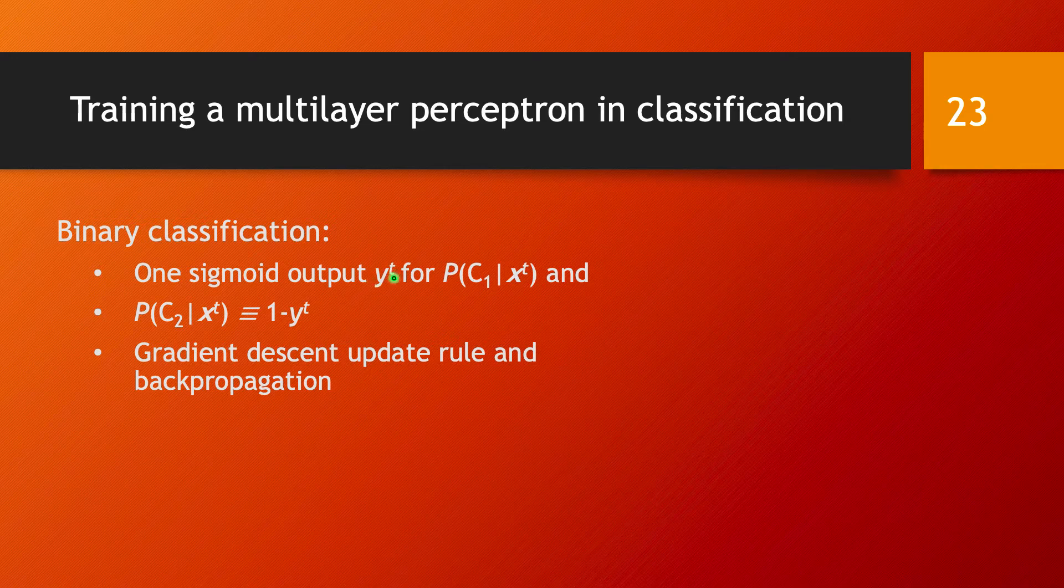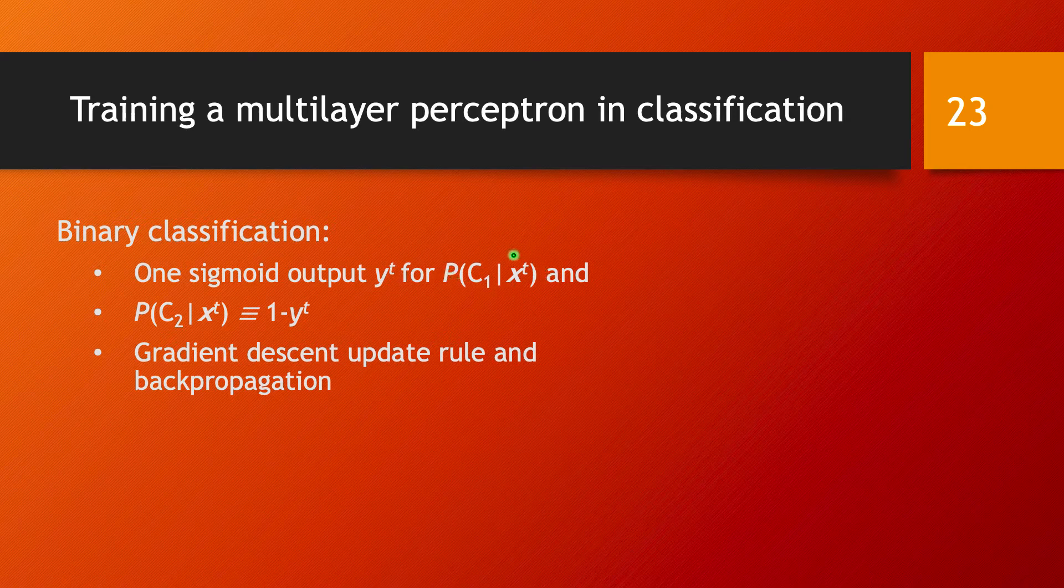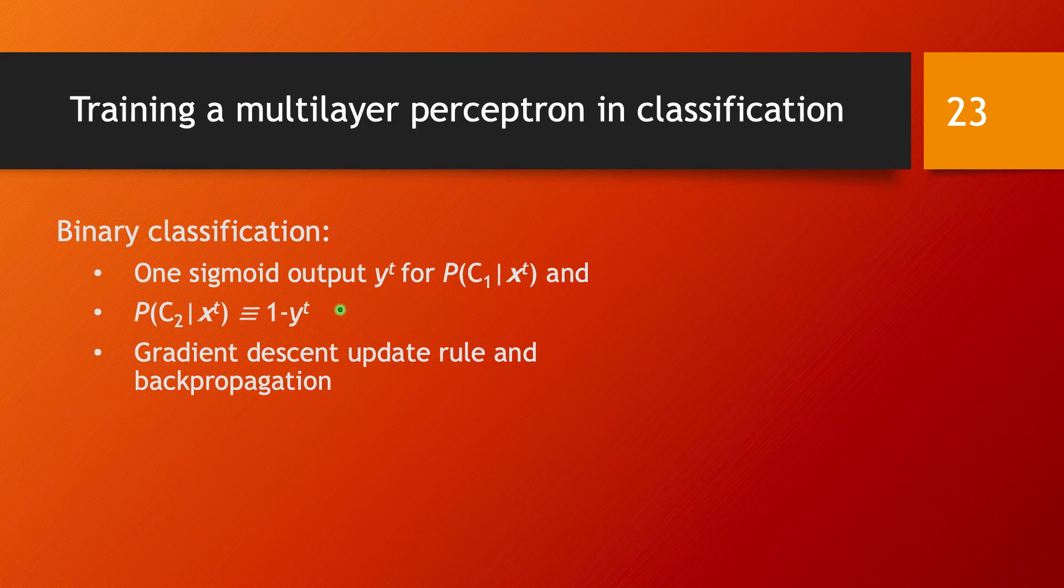So one single output for binary classification is enough because that describes the first class, and by default the other one is 1 minus. And so this is the architecture we are going to use for a binary classification problem.